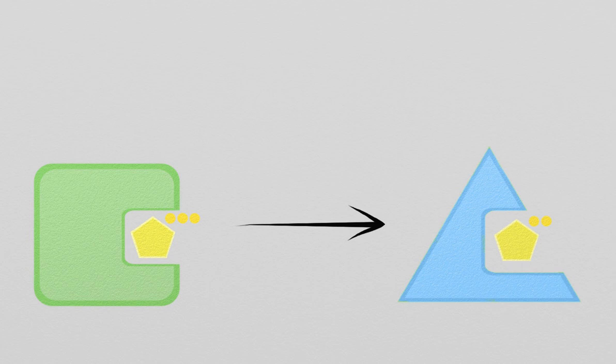depicted here as a pentagon with two dots. This causes a conformational change that deactivates the GTPase, often causing it to release its other binding interactions.